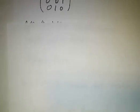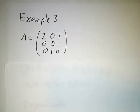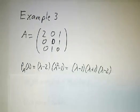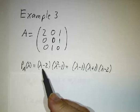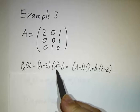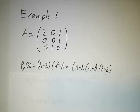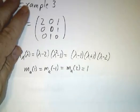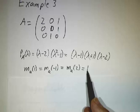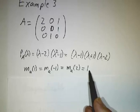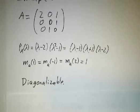Last example is just like the second example, except I've changed this 1 to a 2. Now if you compute the characteristic polynomial, it's (λ-2)(λ²-1). So the roots are 1, negative 1, and 2. They all have algebraic multiplicity 1, so they all must have geometric multiplicity 1. So it's diagonalizable.